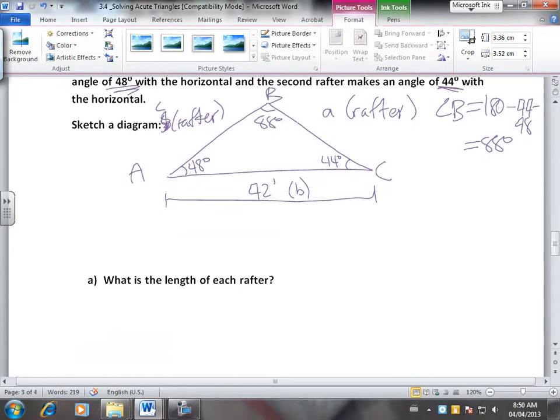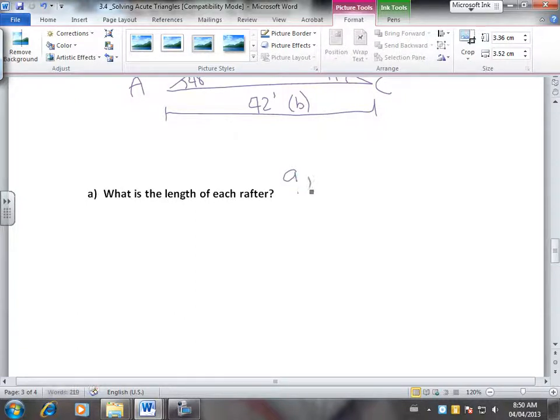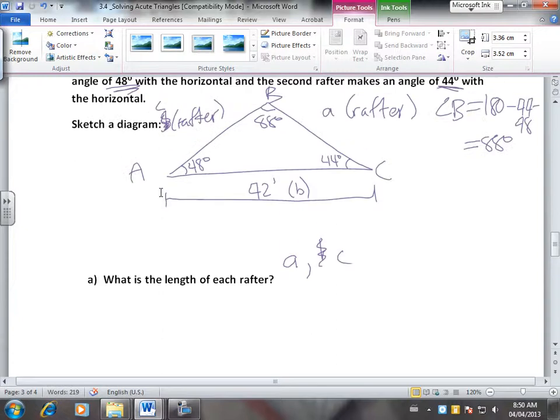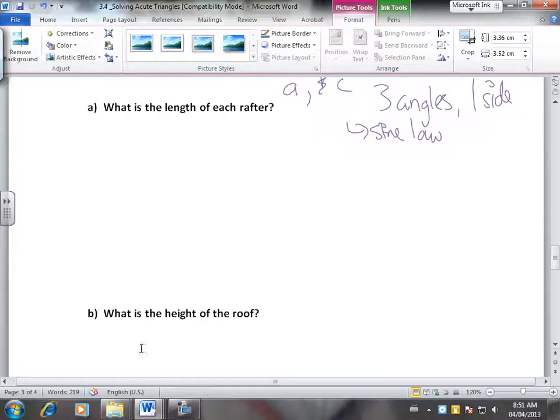So now we want to find the length of each rafter. So we want to know A and C. What are lengths A and C? So if we look for A, just because it comes first, if we're looking for A, we have three angles and a side. So when we look at the two, I mean, if you go back to your notes on 3.3, and if we look at this, we're going to use sine law. So we're going to solve for A with sine law.